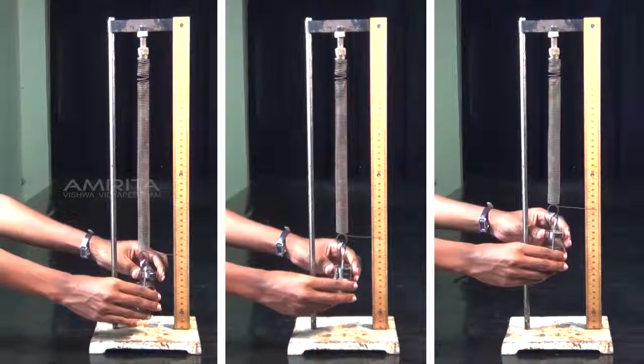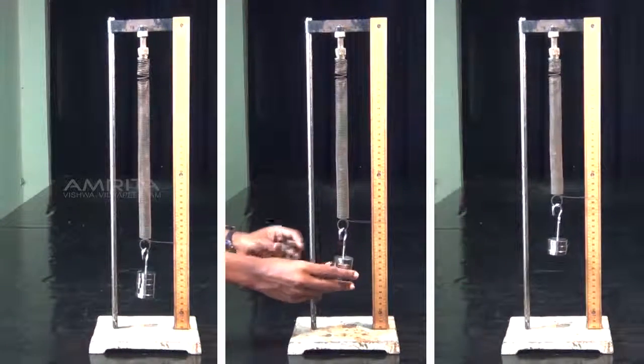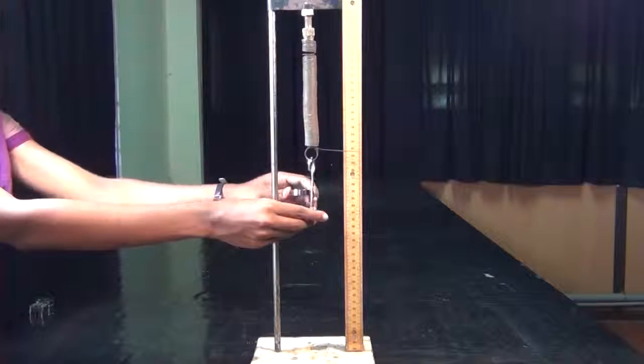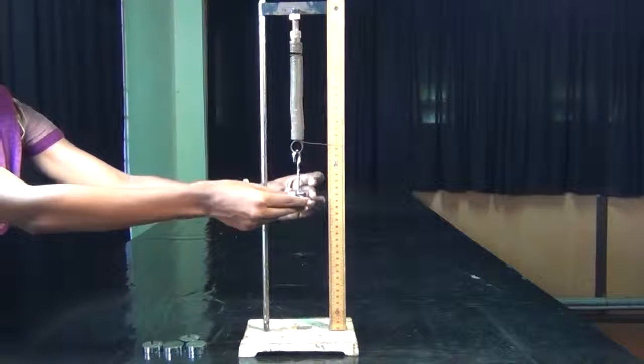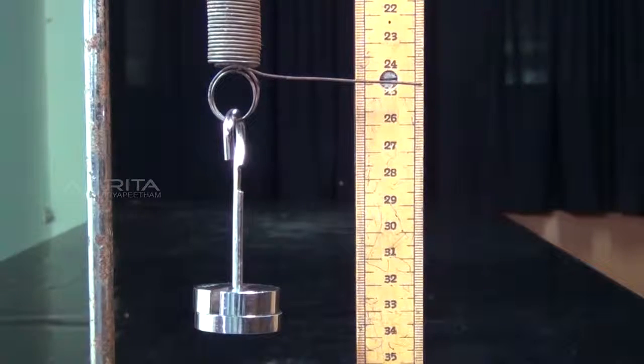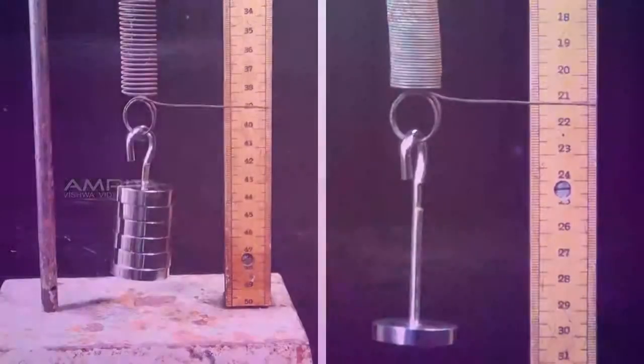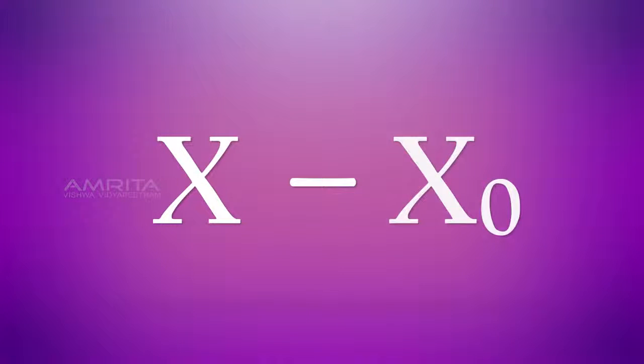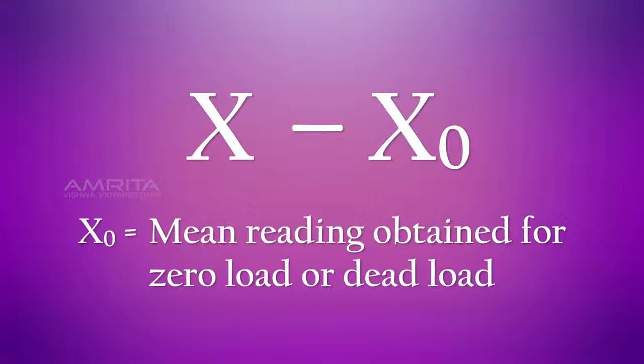Now, slotted weights are unloaded one by one and each time the reading of the pointer is noted. Repeat the process till only the hanger is left. The mean of readings x corresponding to loading and unloading for each load M is calculated and the corresponding extension L is determined by finding x minus x0, where x0 is the mean reading obtained from zero load or dead load.